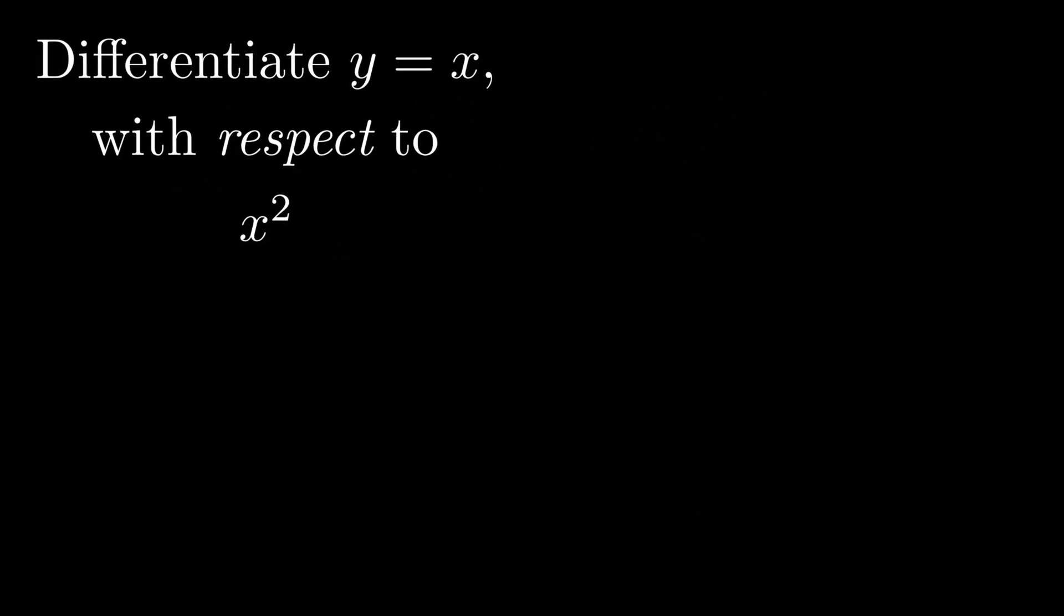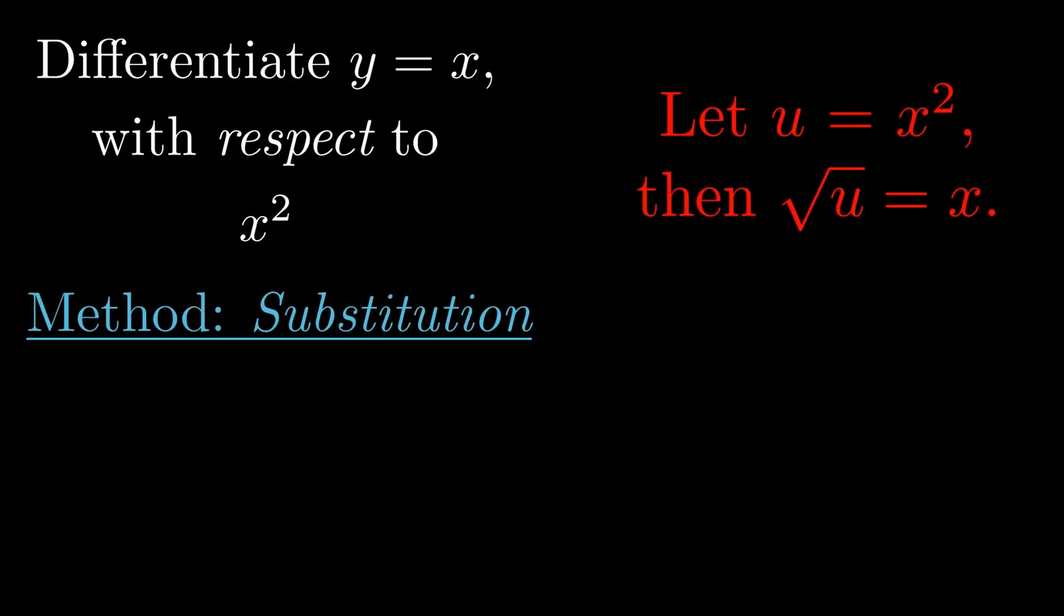This can be solved via the chain rule, but our method is going to be a simple substitution. So we're going to begin by letting u equal x squared. Then by taking the square root of both sides, we can write the square root of u equals x.